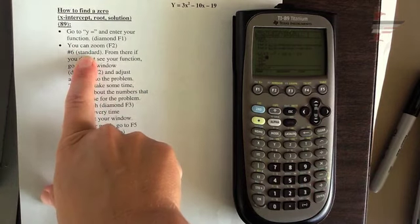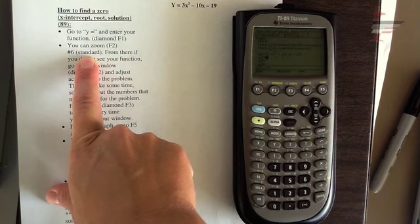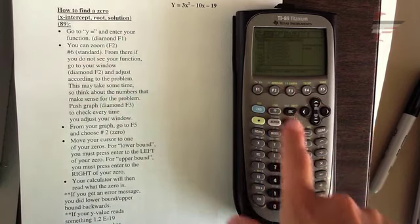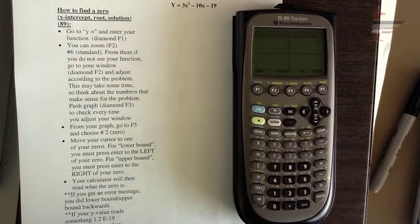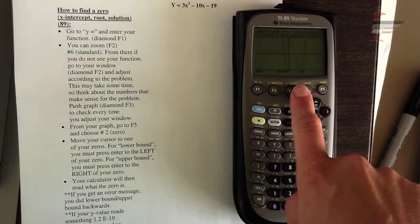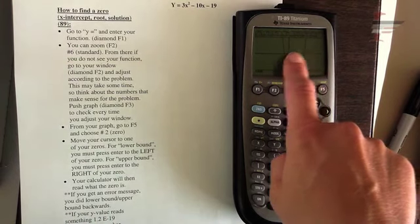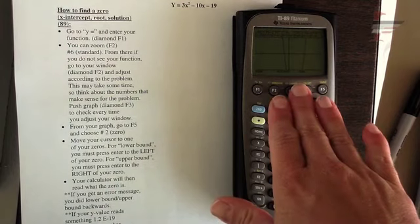Then I always recommend that good old standard window to just kind of get you hopefully to see something. So if you go to zoom F2, zoom right there, F2 and then standard windows number six, and we should see a parabola opening up because a is positive. I can't see my minimum, but I can see my two solutions, zeros, x-intercepts, roots. That's all I need to see.